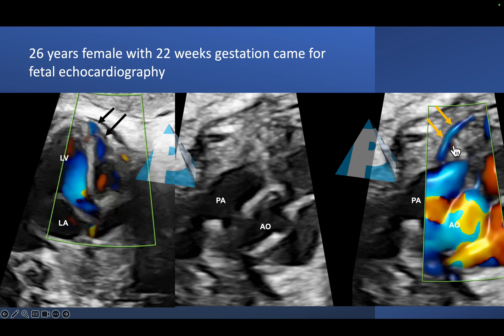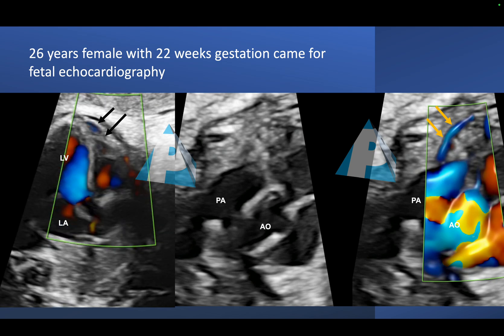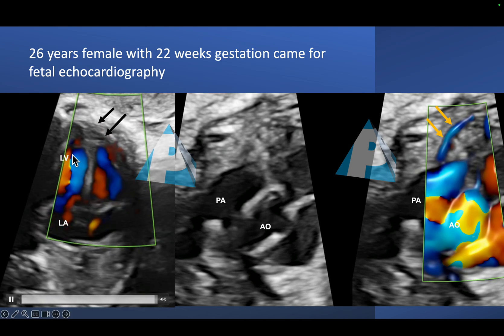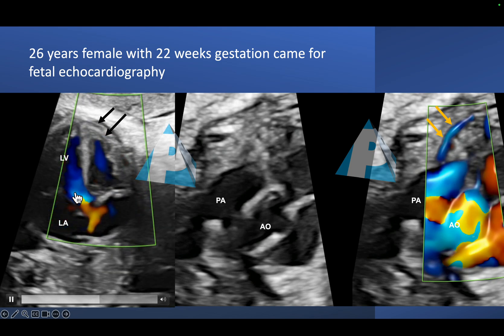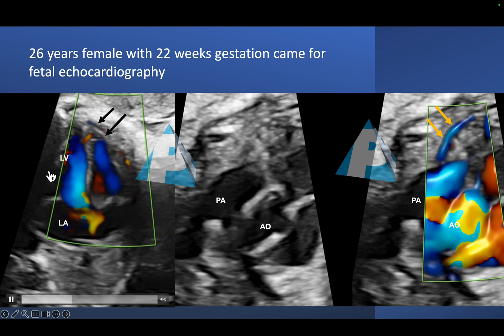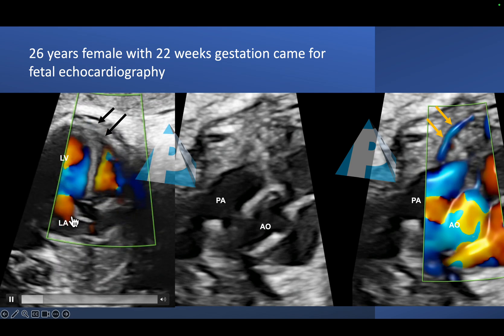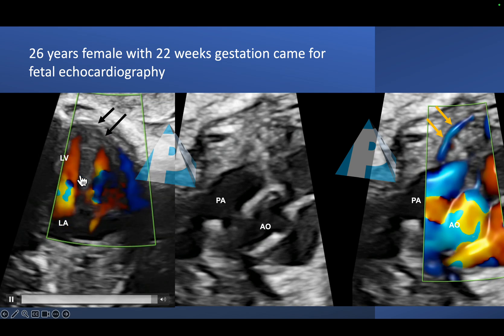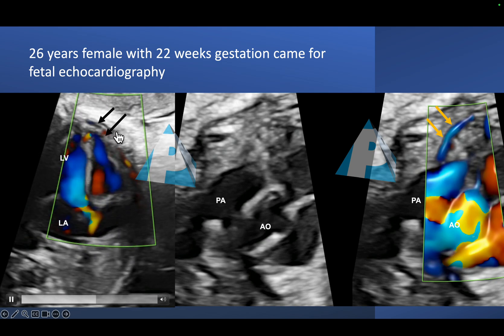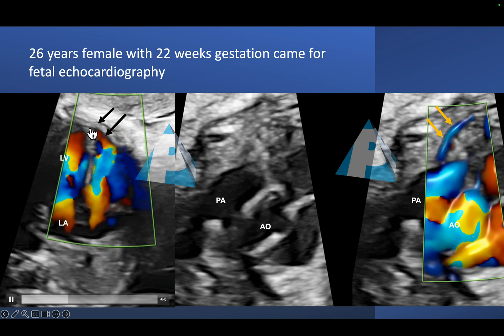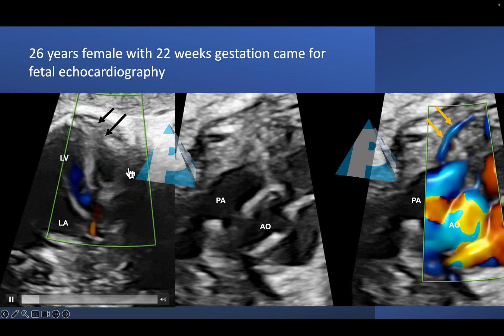I present another case: a 26-year-old female at 22 weeks of gestation who came to us for a fetal echo. At 20 to 22 weeks of gestation, the size of the fetal heart is the size of an almond — and this is what we see at that size. Orienting you to the fetal echo: this is the left ventricle, left atrium, this is the aorta, and this is the right ventricle. The chambers are normally sized and not dilated, hypertrophied, or hypokinetic. What you do see is flow below the pericardium — a flow of a coronary artery.